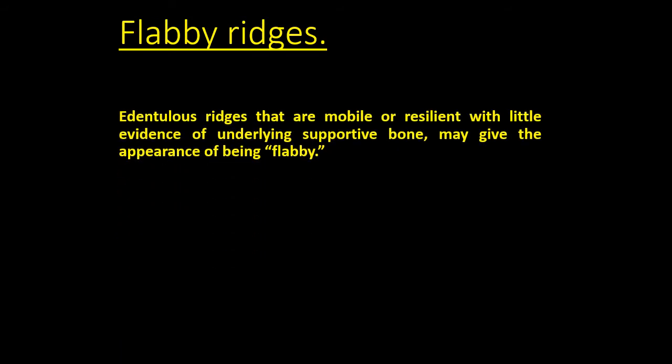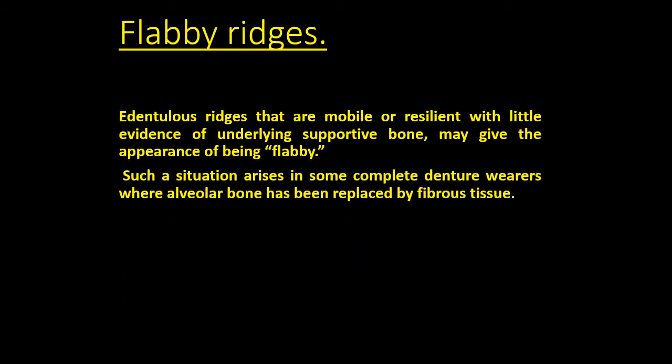The topic for today is flabby ridges and abused tissue. Flabby ridges are those ridges which show little evidence of underlying supporting bone, and they are mostly seen in cases of those who wear a complete upper denture against lower natural teeth.